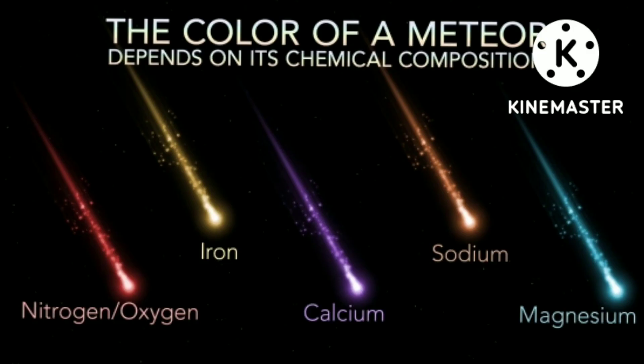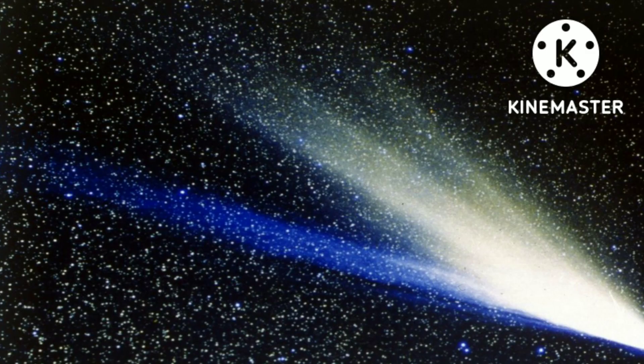Meteor color depends on their chemical composition and how quickly they move through the atmosphere. Yellow meteors are usually high in sodium, orange-yellow meteors contain iron, blue-green meteors contain magnesium, violet meteors are rich in calcium, and red meteors result from superheated nitrogen and oxygen in the atmosphere. But a single meteor streak can display multiple colors, relating to its minerals and the ionization of air.